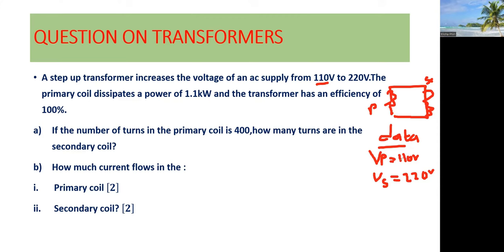Saying the primary coil dissipates a power of 1.1 kilowatts, and the transformer has an efficiency of 100%. So if a transformer is 100% efficient, what it means is there is no energy lost. So primary power is equal to secondary power.